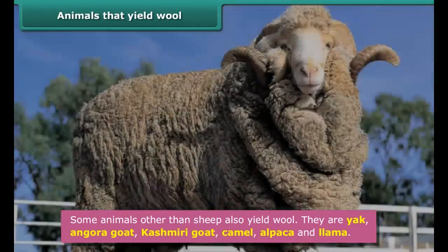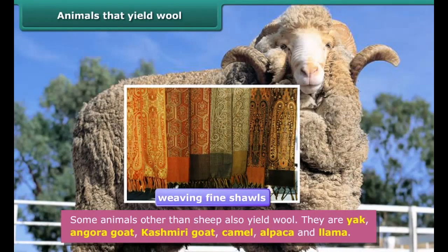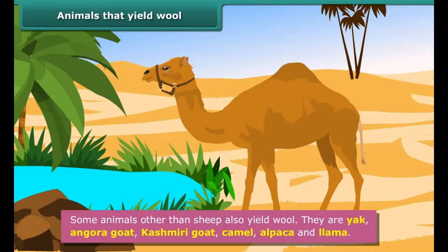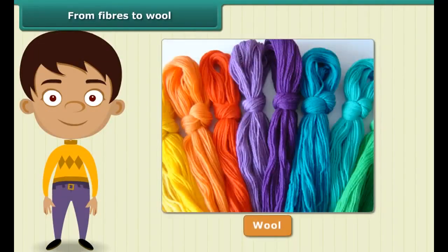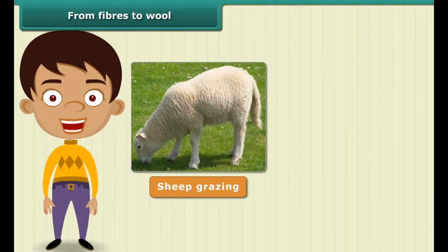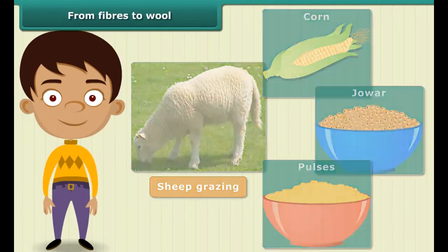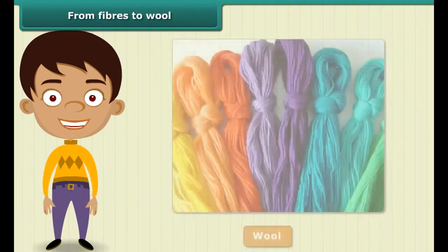Some animals other than sheep also produce wool. They are: yak — yak wool is common in Tibet and Ladakh; Angora goat — found in hilly regions such as Jammu and Kashmir, and the wool obtained from it is called Angora wool; Kashmiri goat — the wool obtained from it is very soft and is used in weaving fine shawls, popular as Pashmina shawls in India; camel — the fur on the body of a camel is also used as wool; and llama and alpaca — they are found in South America and they yield wool.